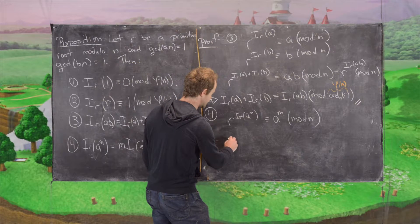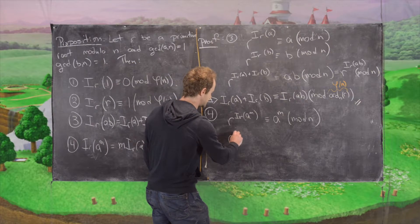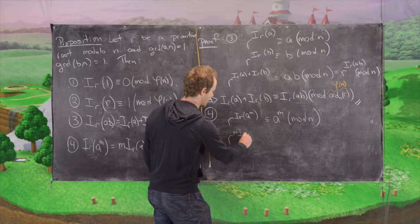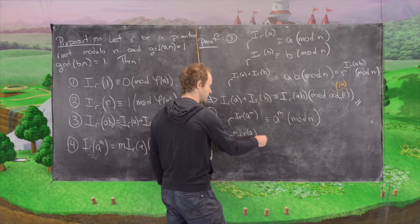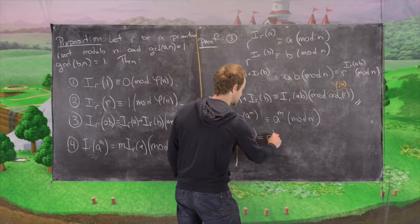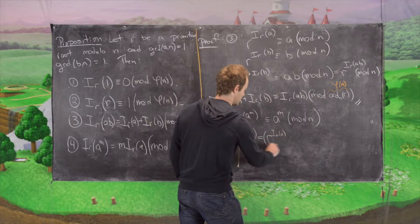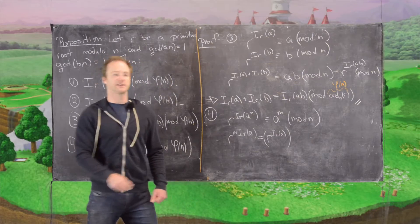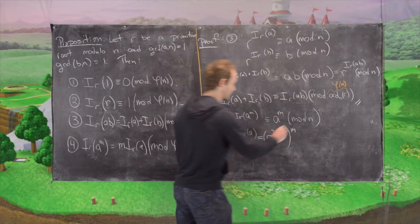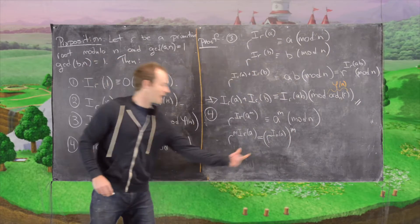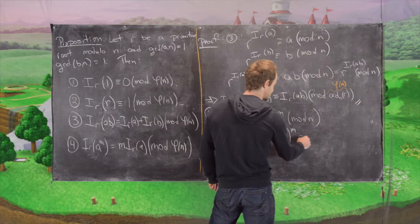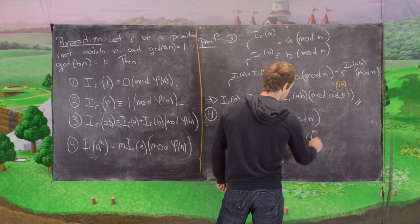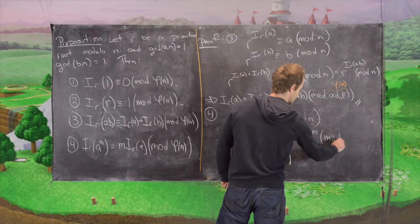And then fact number two is r to the m times i_r(a). Now using exponent rules, that's the same thing as r to the power i_r(a) all to the power of m. But now we know that this part in the interior is just a, so that tells us this is congruent to a to the m mod n.